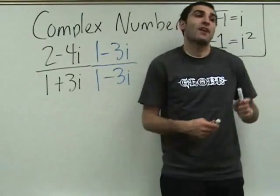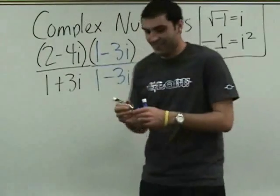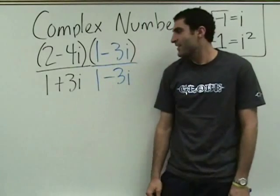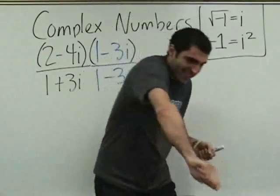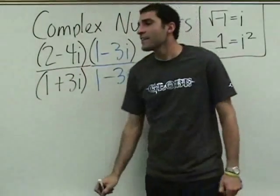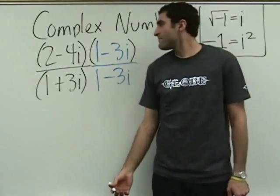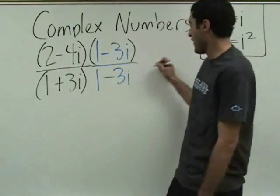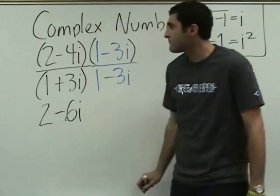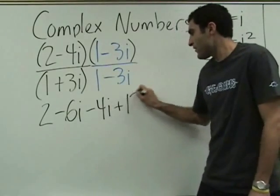Now we have a FOIL party. Some people have Tupperware parties — we have FOIL parties. Volunteer to FOIL the top: two, minus 6i, minus 4i, plus 12i squared.